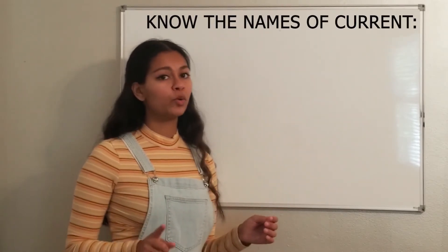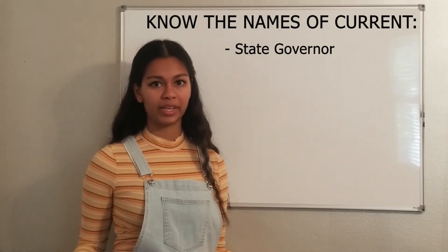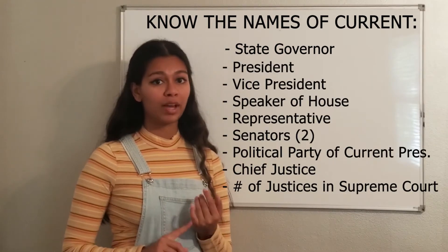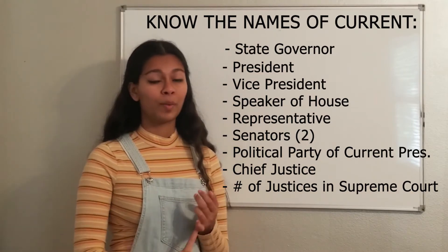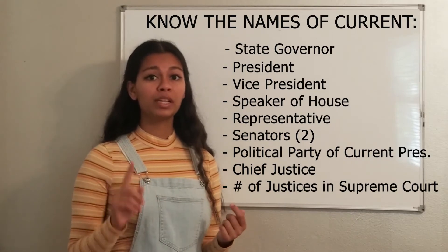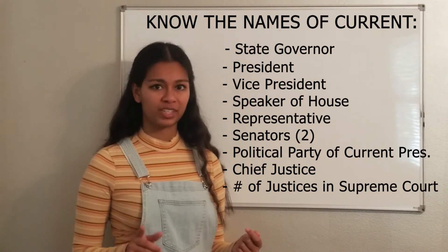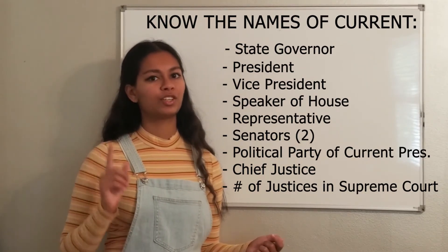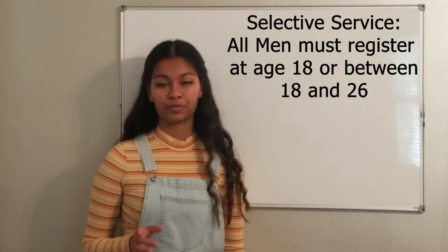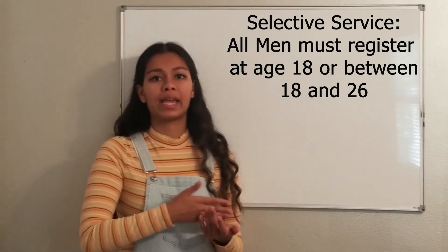Make sure you know the name of your state governor, which will differ based on where you live. Also know the name of your president, vice president, speaker of the house, your representative, your state senators, the political party of the current president, the name of the chief justice, and how many justices are on the Supreme Court. All men must register for the Selective Service between the ages of 18 and 26, generally at age 18.